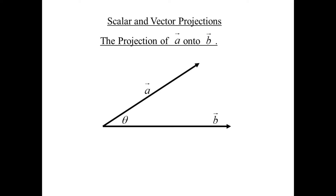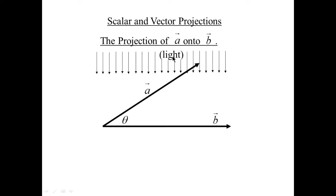Hello and welcome back to Math Class in Session. Today: scalar and vector projections — the projection of A onto B. A projector shines a light through a film and projects an image onto a wall. This is similar because it's like there's a light source shining straight down onto B. Vector A casts a shadow onto that vector B. This vector — the shadow — is the projection of A onto B.